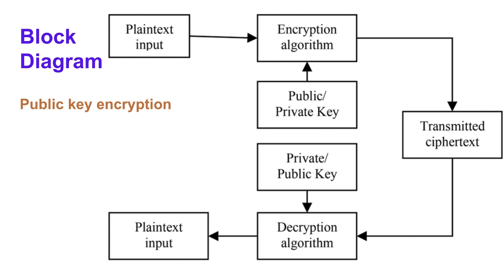The next block diagram covers public key encryption. Here we need to show two keys — one public and one private — and the transmission of ciphertext to the receiver using arrows. Arrows pointing towards the encryption algorithm indicate the plaintext input and the key used. As per the scenario, if it is normal data transmission, encryption uses the receiver's public key; if it is a digital signature, encryption uses the sender's private key. That is why the diagram labels both boxes as 'public or private key.'